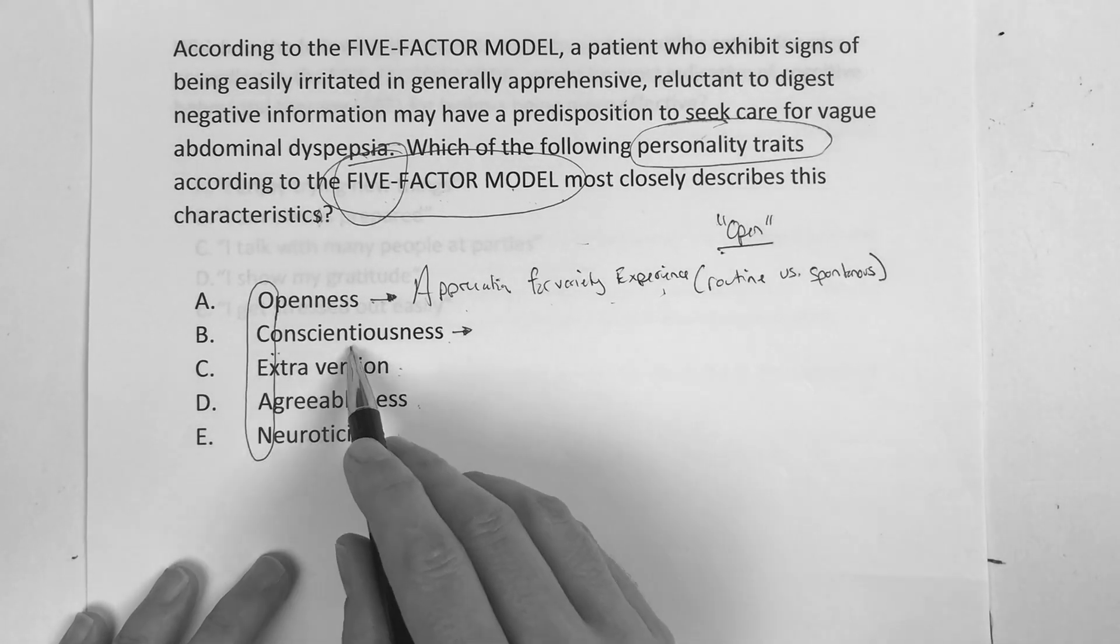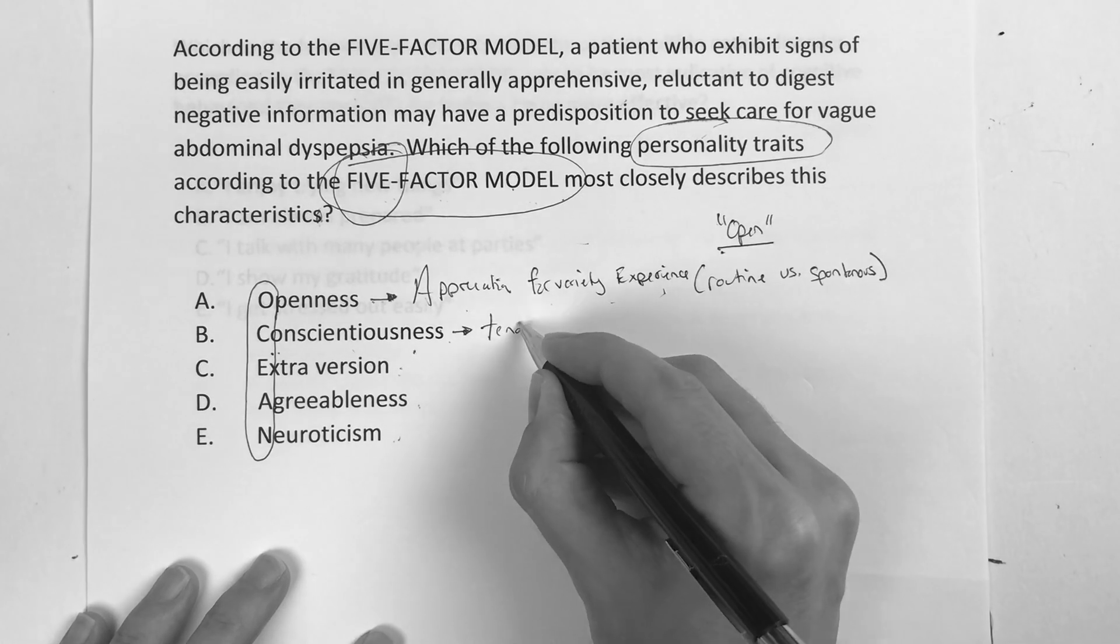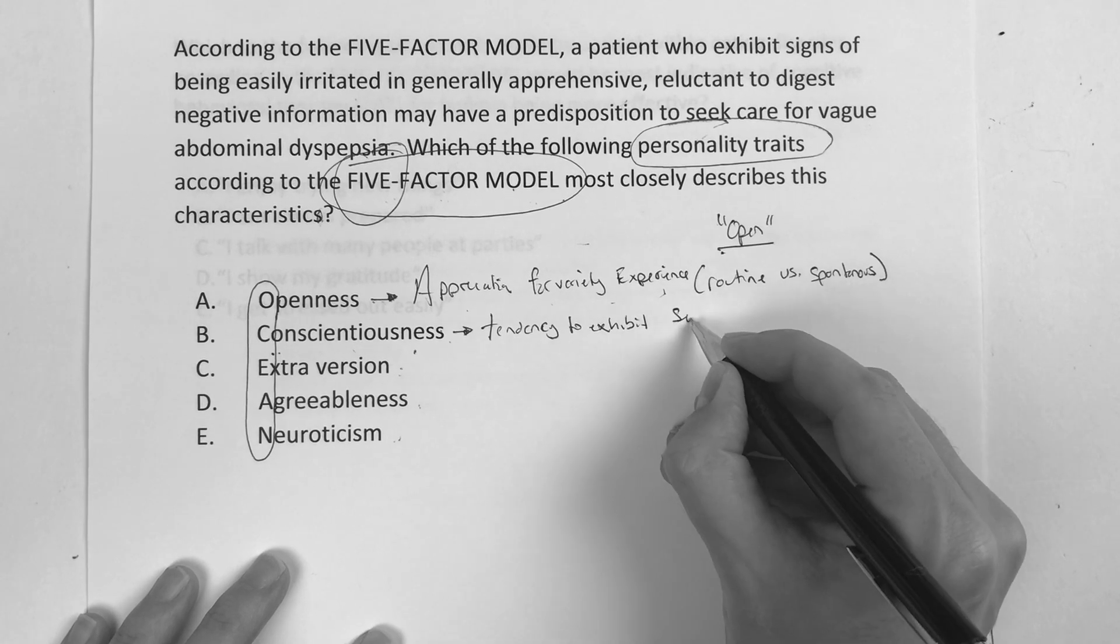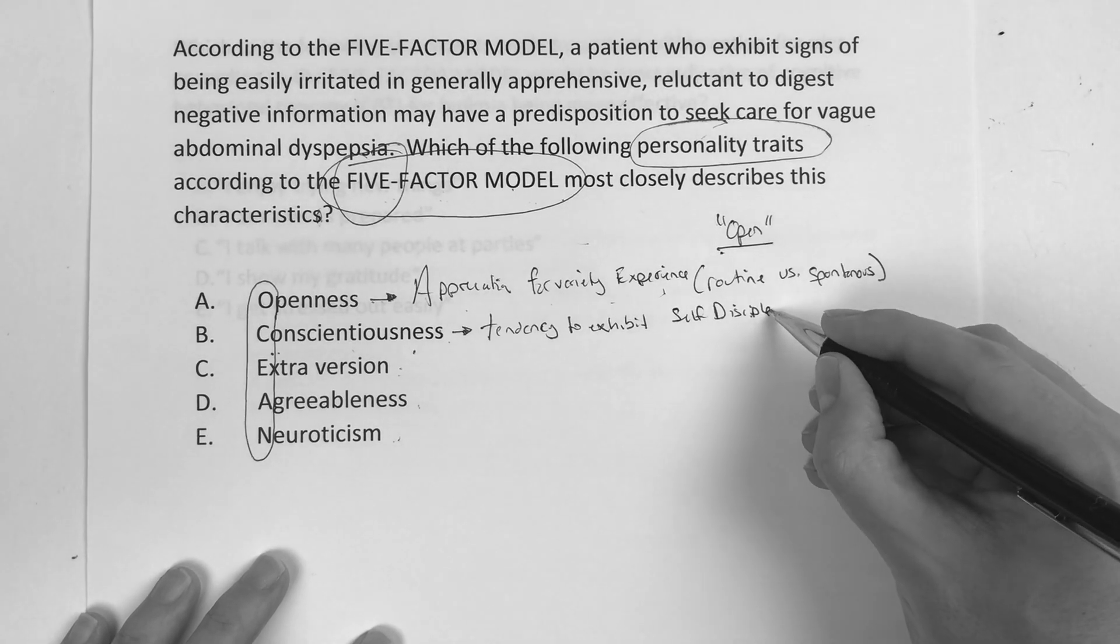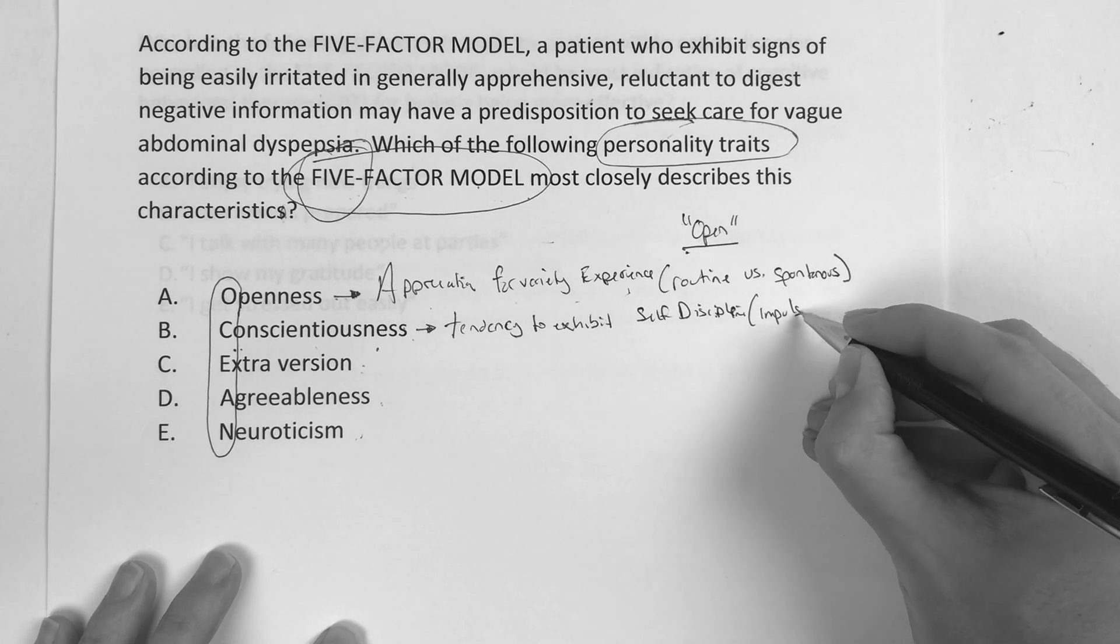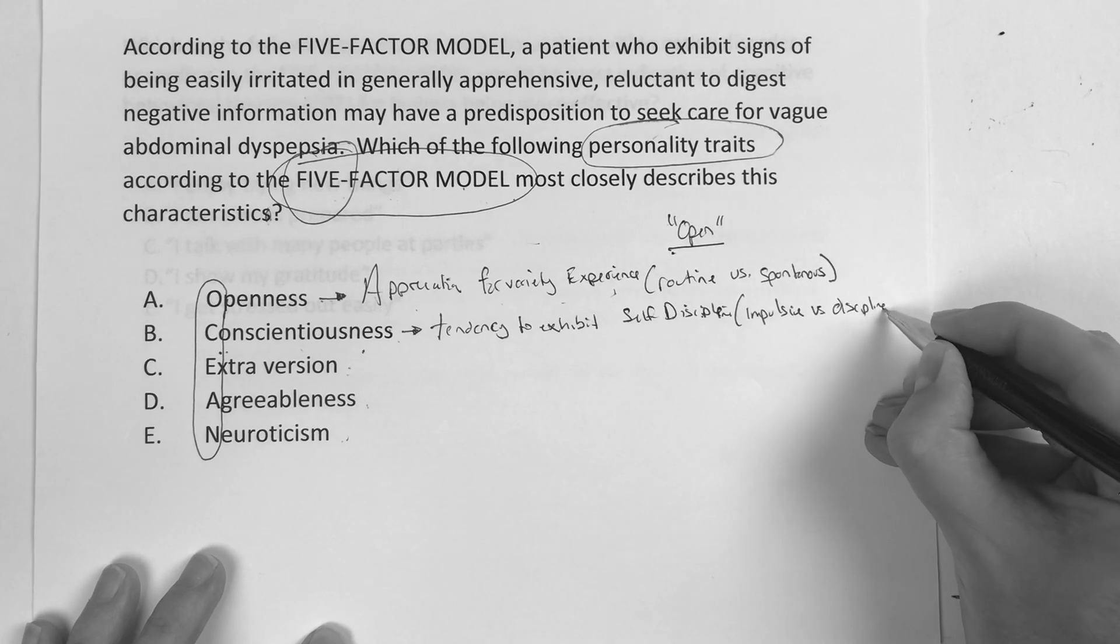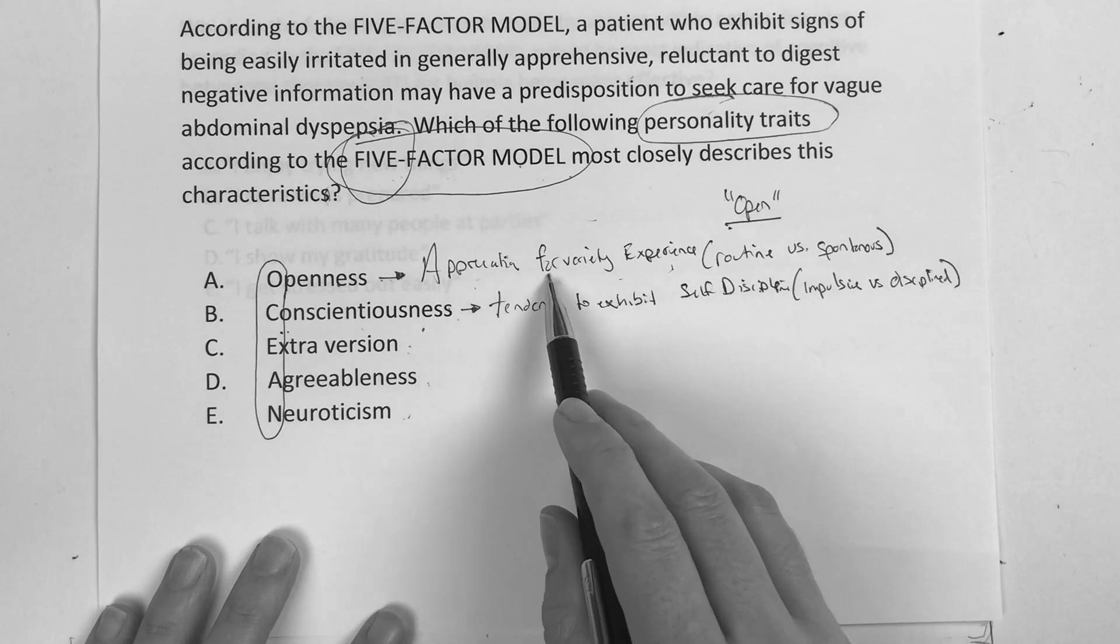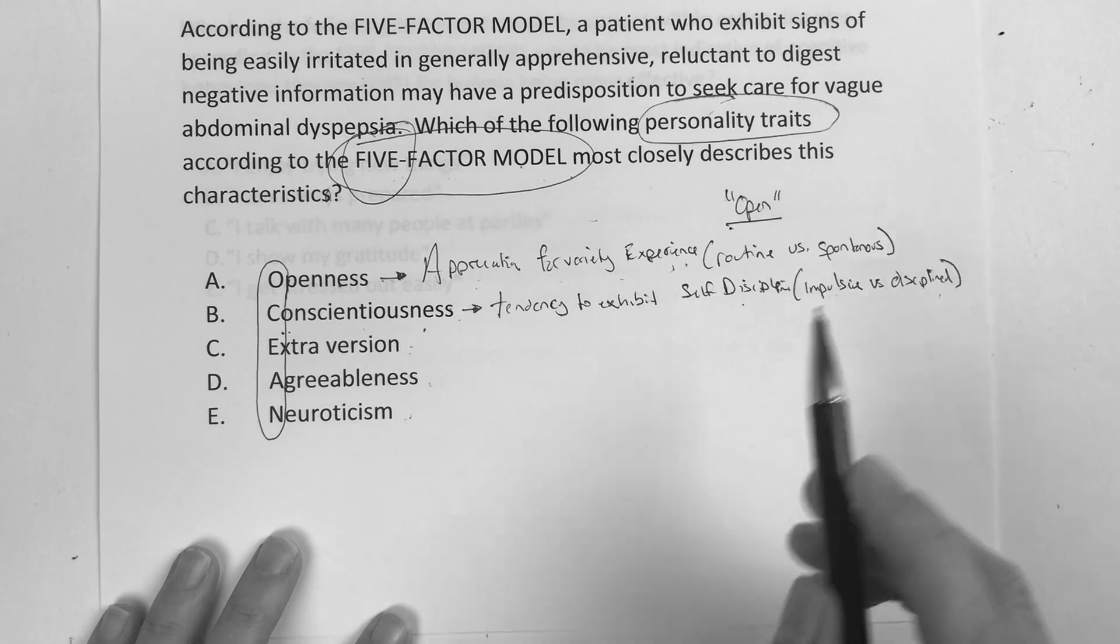The next one is conscientiousness. Now conscientiousness is the tendency to exhibit self-discipline. And it's one of the five main factors of someone's personality. The two extremes are, are you impulsive versus disciplined or careful?